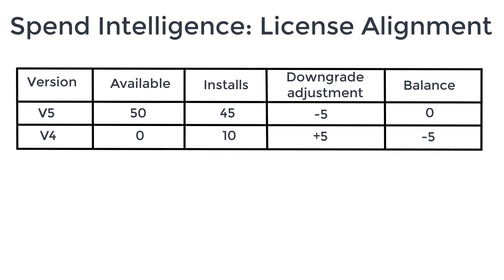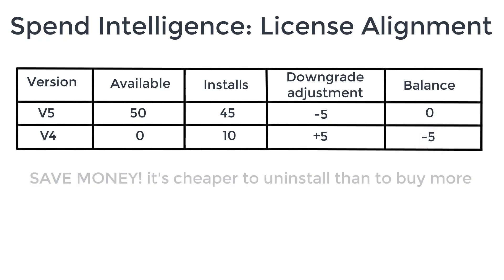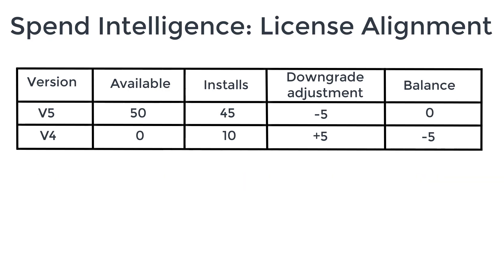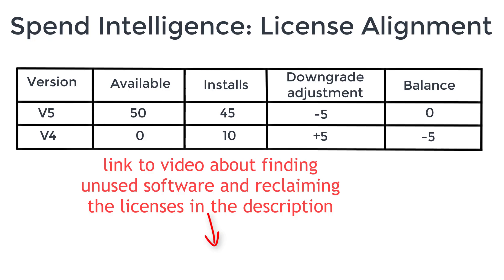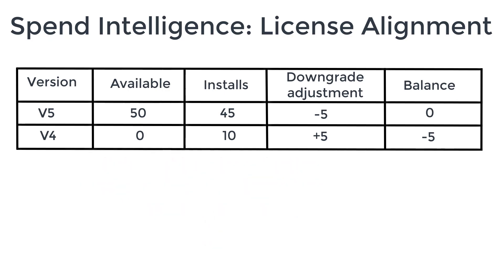We now have a deficit of only 5 licenses for V4, but before you dash off to buy new licenses I'd recommend using Ivanti Neurons for Spend Intelligence to look for installations that are not being used. It's much cheaper to uninstall software that isn't being used than to buy additional licenses. I'll put a link in the description to another video about finding unused software. I hope you found this video useful — please look in the help for details about how to do these tasks in Ivanti Neurons.